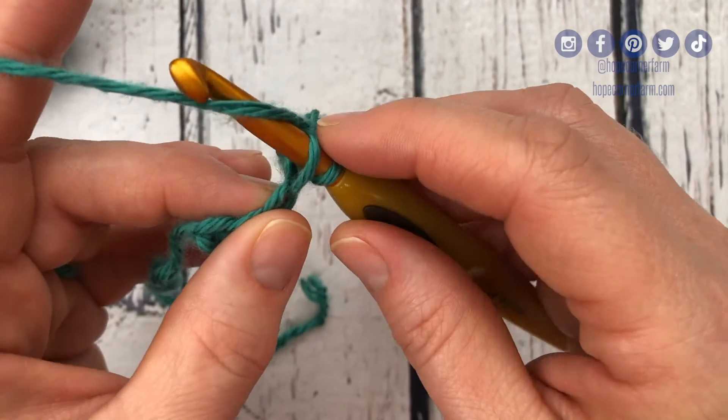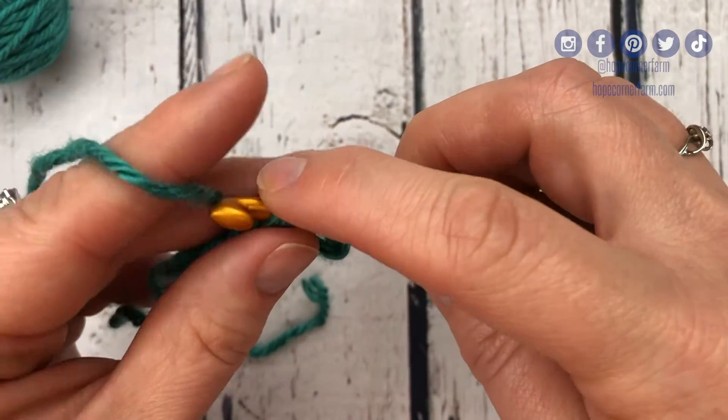So we come up, grab that hook, keep it horizontal, pull through. Now though, if I were to keep it horizontal for these second loops, I would catch.